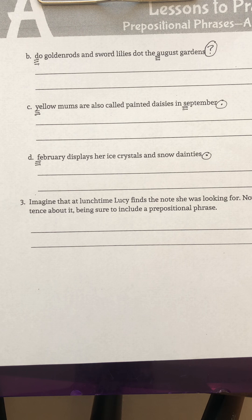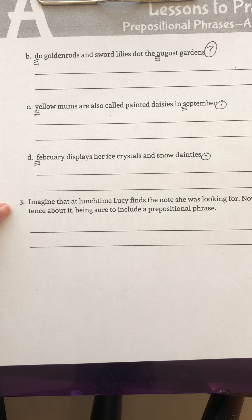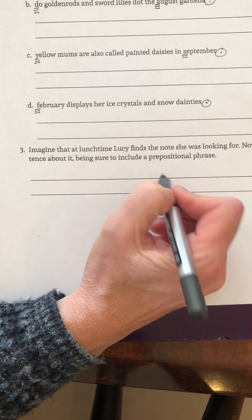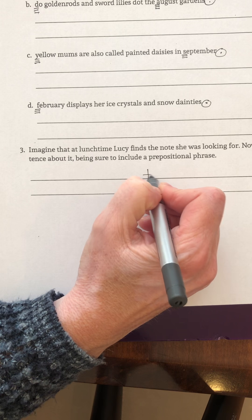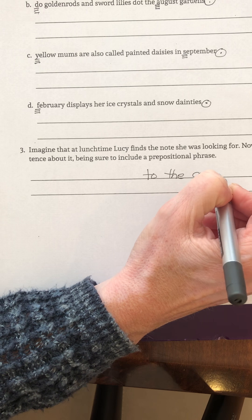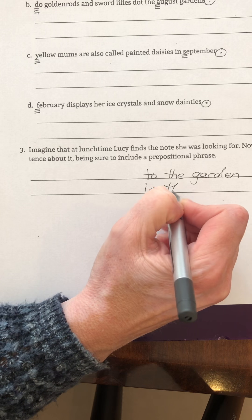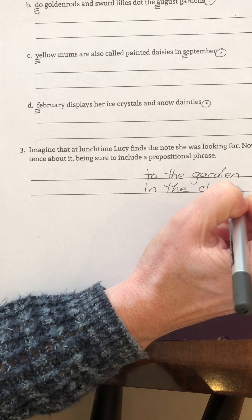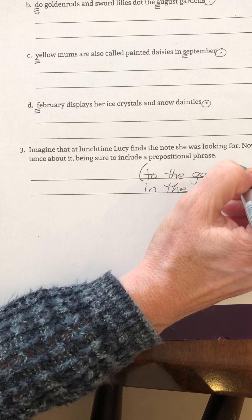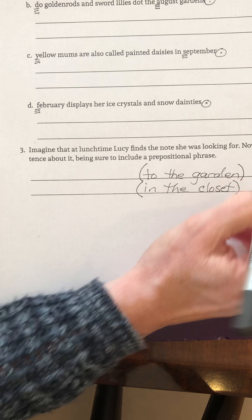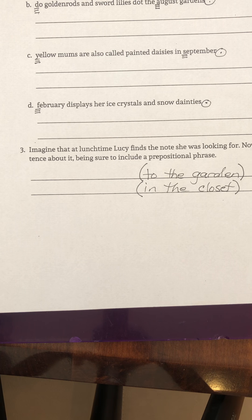You are going to complete number three all by yourself. It says imagine that at lunchtime Lucy finds the note she was looking for — now write a sentence about it. Be sure to include a prepositional phrase. Please mark your prepositional phrase — for example, she went to the garden, or in the closet. Whatever prepositional phrase you use in your sentence, I want you to mark it using those same prepositional phrase markers so that I know that you know what you're writing about. Take a picture of all that when you get finished and I look forward to seeing how you're doing. Have a great afternoon. Bye-bye.